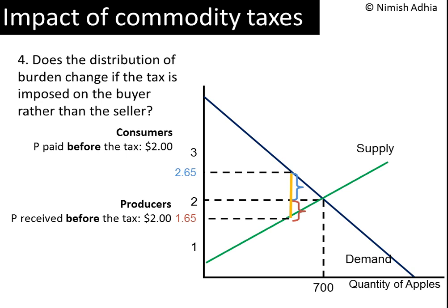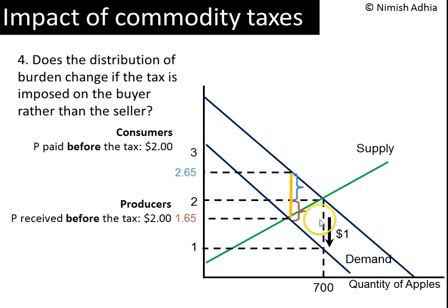The consumers must now pay $1 to the government every time they buy an apple. That adds to their cost of buying apples. Consequently, the demand for apples will decrease and the demand curve will shift to the left. In fact, in this case we can tell by exactly how much the demand curve will shift: the demand curve will shift such that the difference in the height of the new and the old demand curve will be equal to exactly $1.